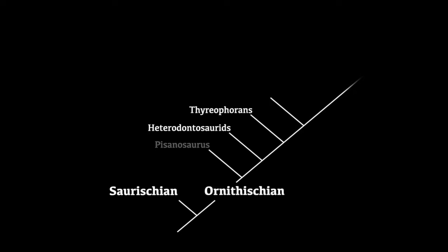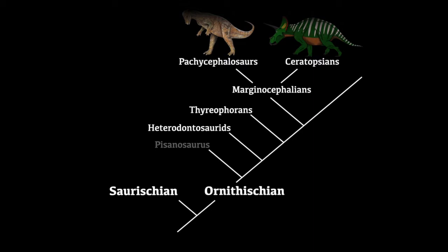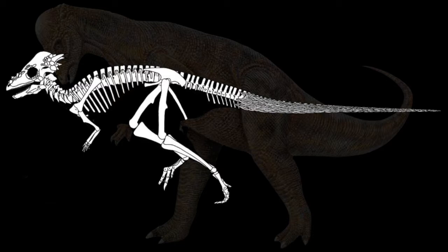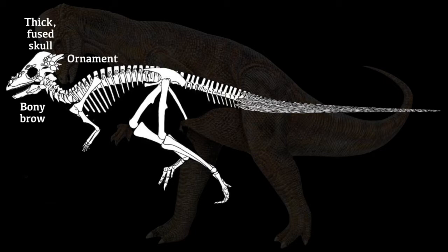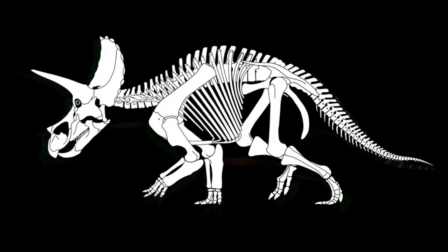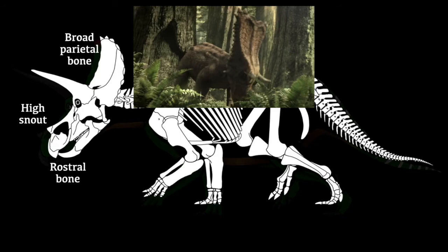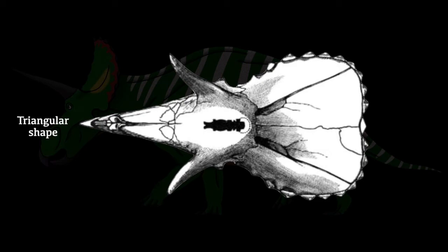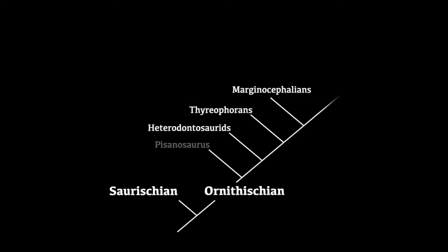The next group were the Marginocephalians. Although we don't know what they started off like — almost certainly bipedal — they had something strange going on with their skulls, producing the Pachycephalosaurs and the Ceratopsians. The main feature of the Pachycephalosaurs was a very thick fused skull, with bony eyebrows and various ornaments like spikes on the back of their skulls — examples include Pachycephalosaurus and Stegoceras. The Ceratopsians had a high snout, rostral bones forming a beak, an extended parietal bone producing the famous frill, and a triangular skull shape when viewed from above. Examples are Triceratops, Psittacosaurus, and Styracosaurus.